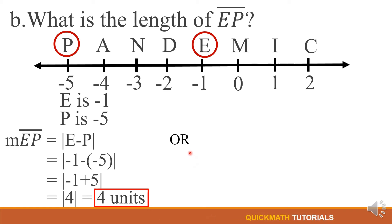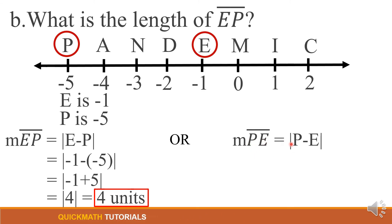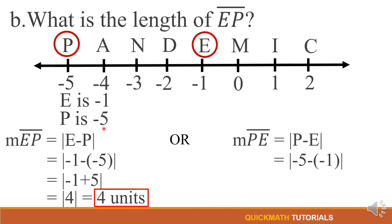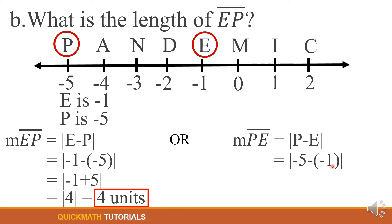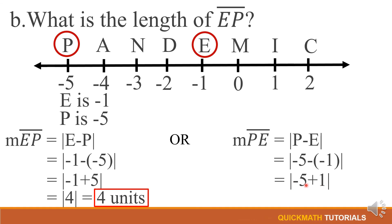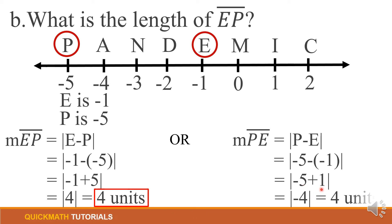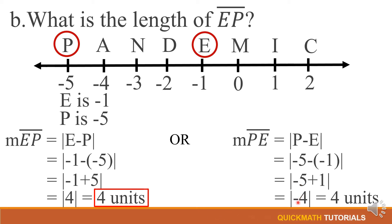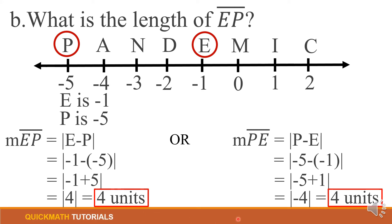You can also solve from P to E: |P − E| = |−5 − (−1)|. Substituting, P is negative 5, copy the minus, and E is negative 1 in parentheses. Negative times negative becomes positive 1, so we have −5 + 1. Since they have different signs, we subtract: 5 − 1 = 4. The larger number 5 is negative, so our answer is negative 4. The absolute value of negative 4 is positive 4 units — just the same answer.